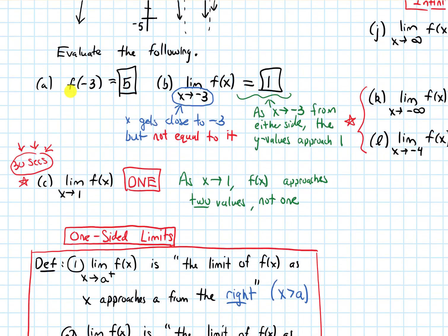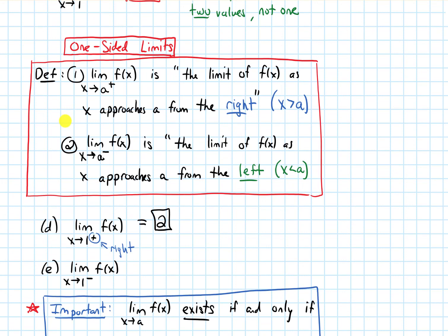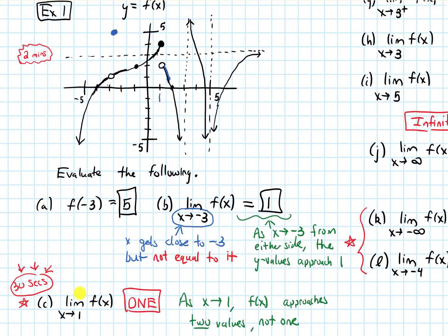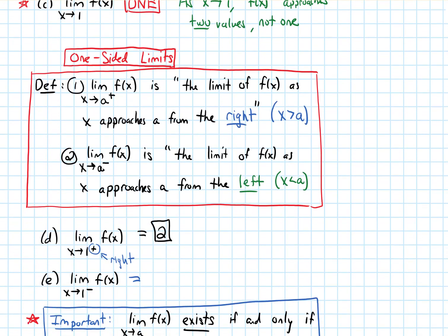Now let's do the limit from the other side, Part E: the limit as x approaches 1 with a little minus sign, meaning from the left. If I'm approaching 1 from the left, that is this part of the graph getting closer and closer to 1, and there my y values are getting super close to 4. So that limit is 4.